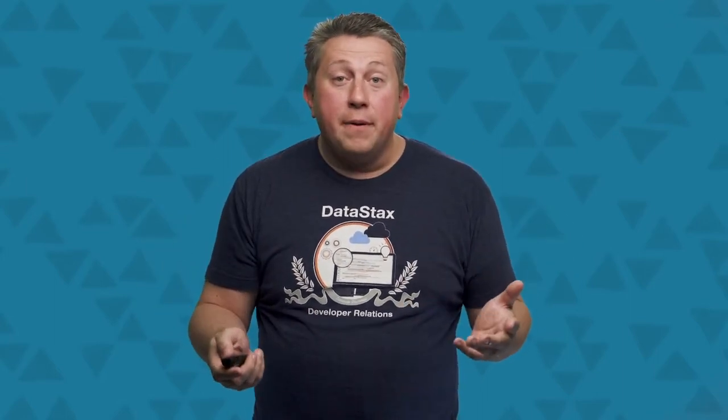Now that we've looked at how to combine two partitions together, let's look at how we combine two SSTable files together. Remember, an SSTable is just full of those partitions that we need to combine. The SSTable on the top has partitions with keys 7, 13, 18, and so on. The SSTable on the bottom has partitions with keys 3, 7, 18, and so on. We need to combine both of these SSTables into a new SSTable. Remember, SSTables are immutable — we don't change them. We just read from existing SSTables, create a new SSTable with all the recent values, and then delete the old SSTables.